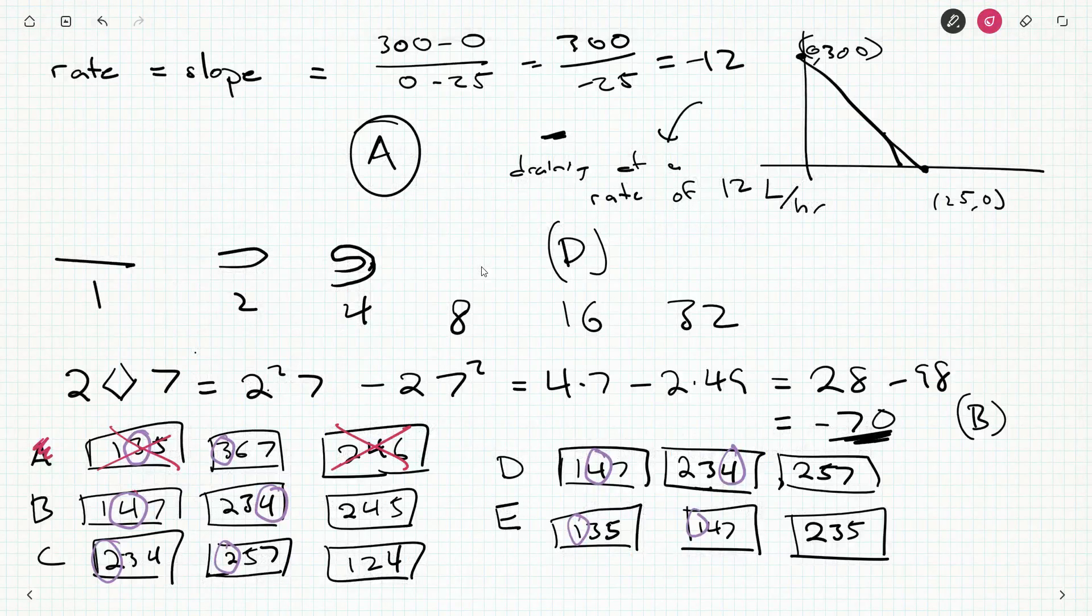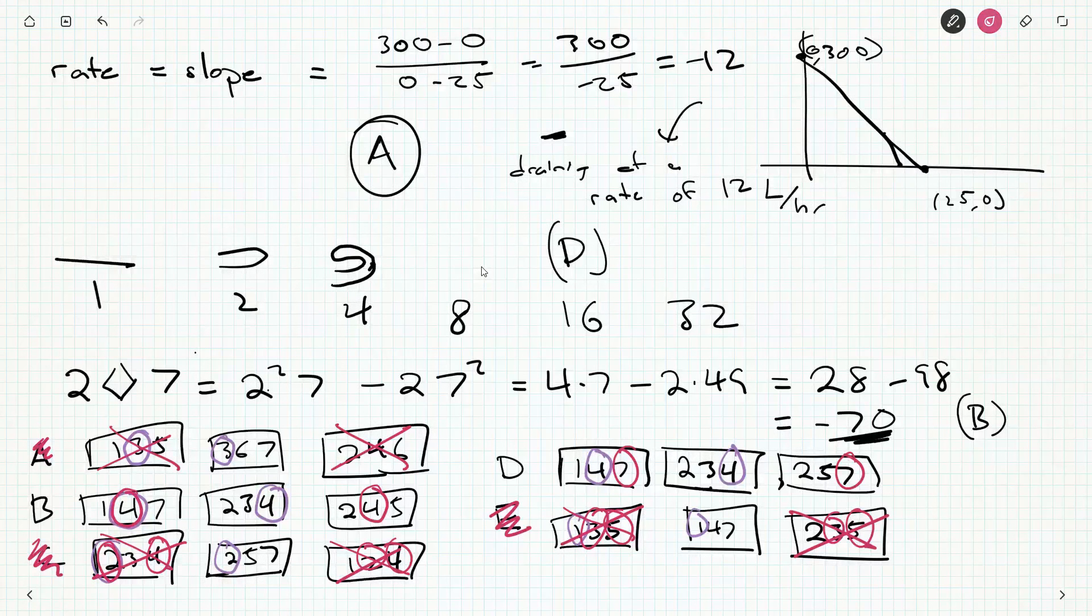We still have four and four in common here, so that's fine. Now, C has two, four, and two, and four, so C's out because that's more than one number in common. Looking like B might be the winner here. D has one, four, seven, so these both have seven in common. And E, well, both cards—the first and third—have two numbers in common, the three and the five. So our answer is either B or D.